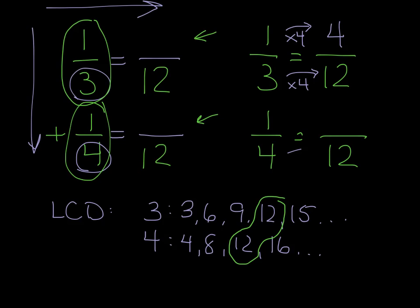The second fraction, to get from 4 to 12, I multiply by 3. Again, whatever I do to the bottom, I also do to the top. So I multiply by 3. My new numerator is 3.